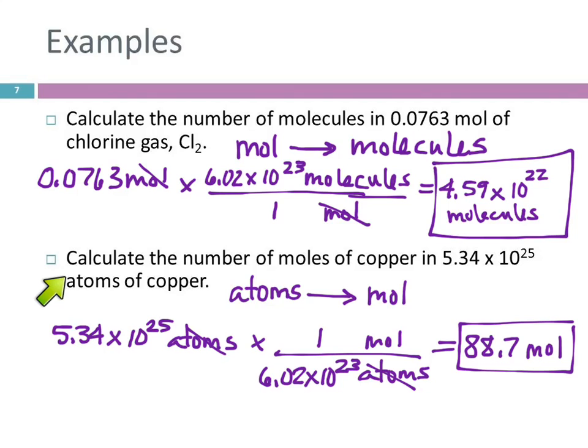Well, we have context here. Calculate the number of moles of copper. Copper is an atomic element, and so this will be moles of atoms. We wouldn't say moles of molecules because it isn't molecules. But we know that by looking at what the substance is.